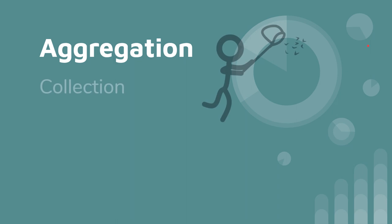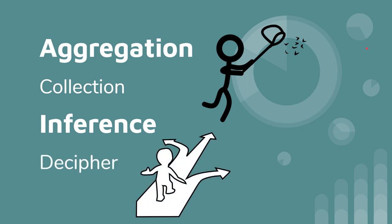Aggregation simply means the collection of publicly available information. Inference means that you're going to decipher something from that collection — so aggregation comes first, then inference. There's a helpful acronym ACID here. When I was studying, I got aggregation and inference mixed up quite a bit, but remember: if you spell them in order, aggregation comes before inference. Aggregation is collection; inference is the deciphering — using collected information to make a decision or decipher something that would otherwise be confidential.